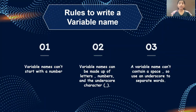A variable can't contain space. So instead of using space, use underscore to separate two words. Example: my name. You can't give a gap between my and name. Instead you can use underscore between my and name. So our variable will look like my underscore name. This is a legal variable.